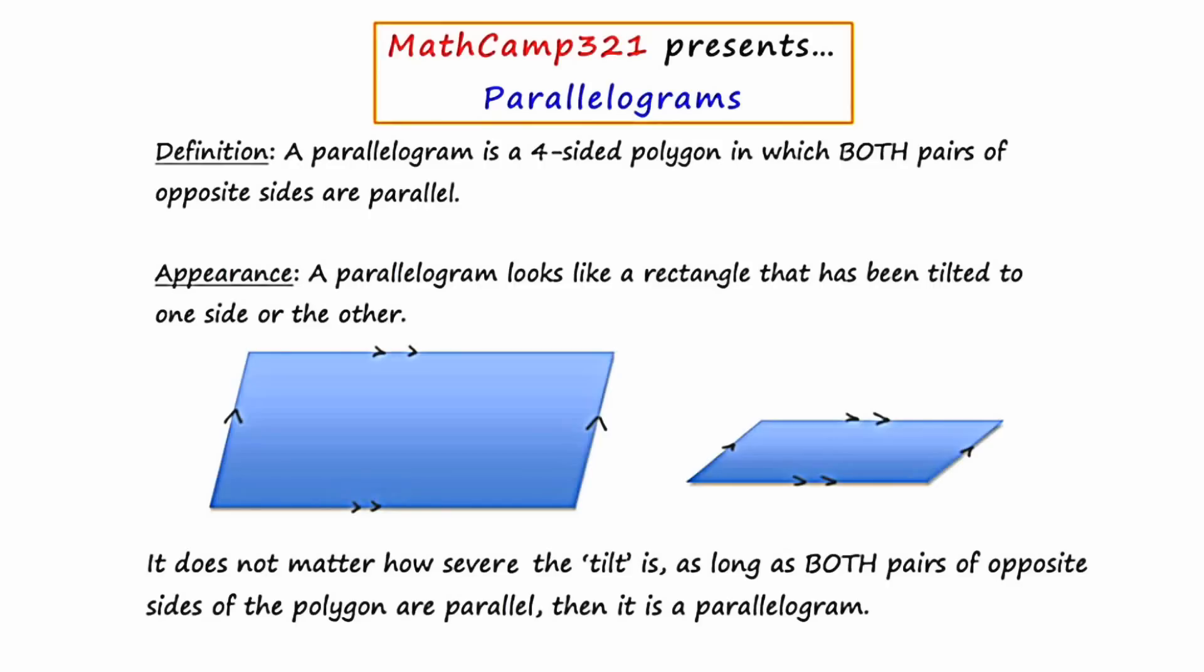And what I've provided for you here are two illustrations of parallelograms. They both tilt to the right, but the first one tilts just a little bit to the right, and the other one tilts more severely to the right. But we can tell from these extra arrows that have been indicated with tick marks that both pairs of opposite sides are parallel. So these two figures are both, in fact, parallelograms.